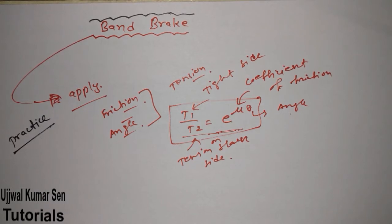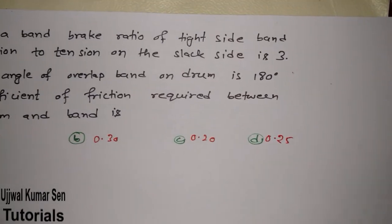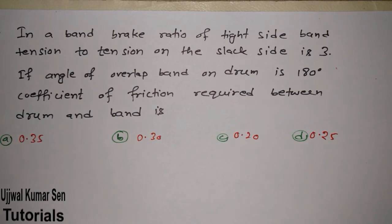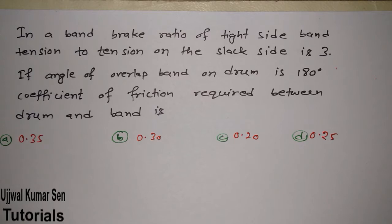The question is now in front of you — you can read it. If you are a beginner, read the question first. In the case of this brake problem: the ratio of tight side band tension to tension on the slack side is 3, and the angle of overlap of the band on the drum is 180 degrees.